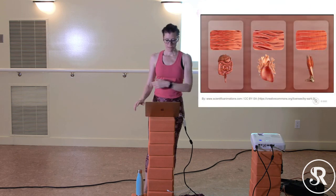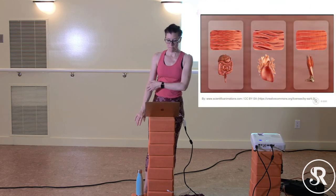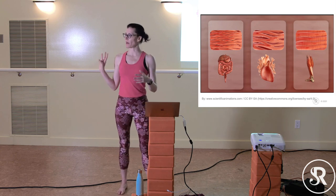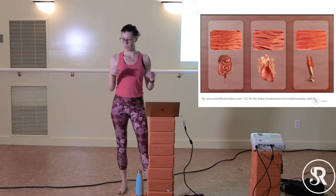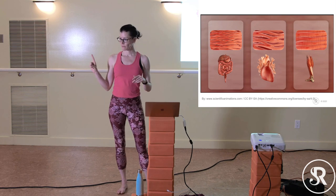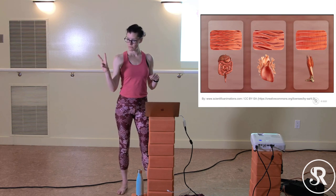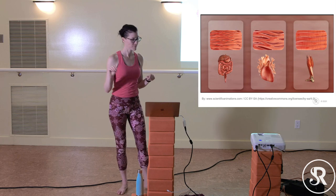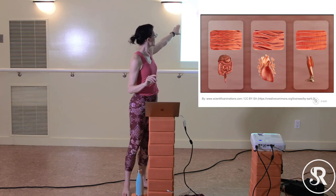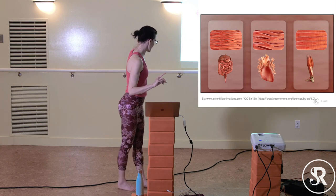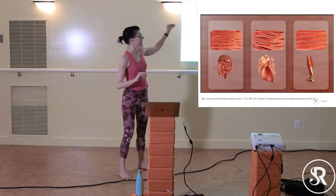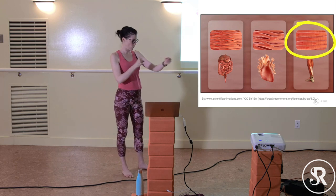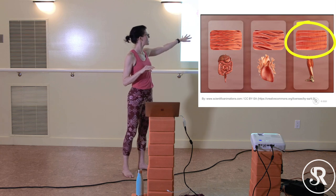We can divide our muscles into three types: cardiac, smooth, and striated or skeletal. Skeletal muscles are lined up in little rows so they can pull force in the same direction, while smooth muscle isn't lined up in rows.